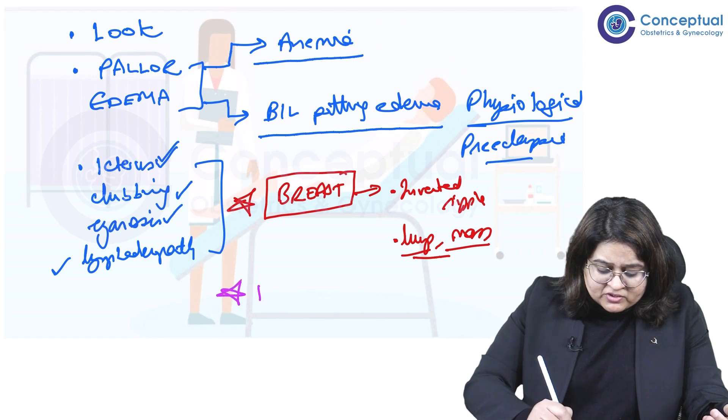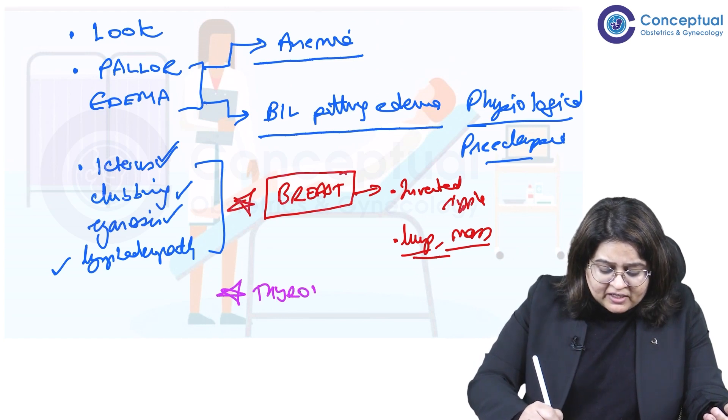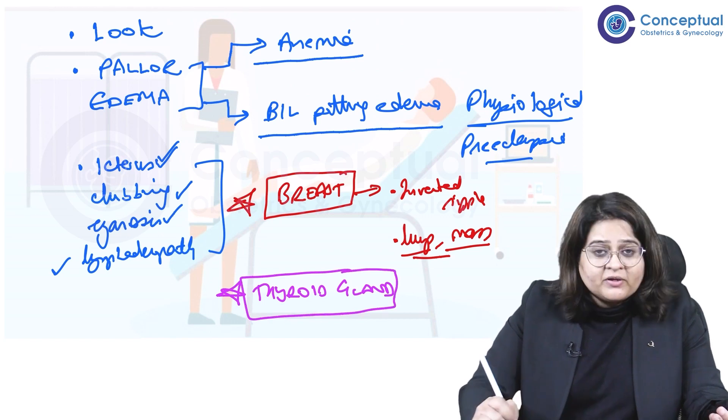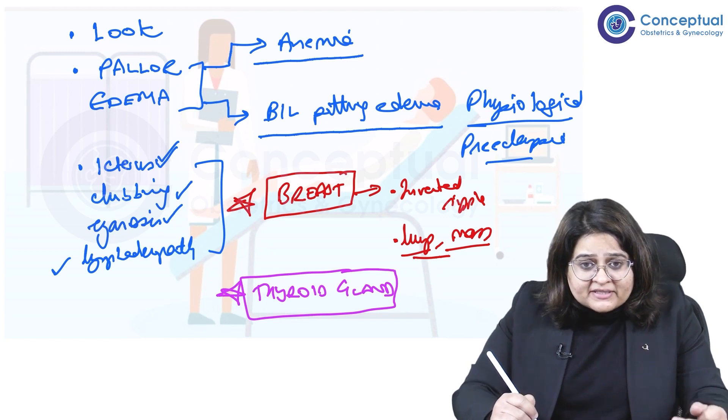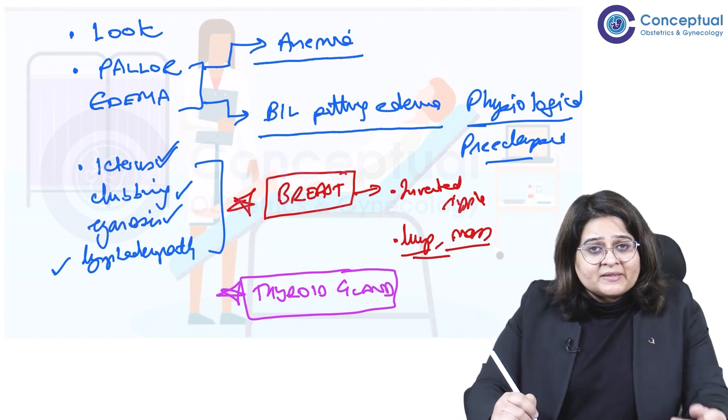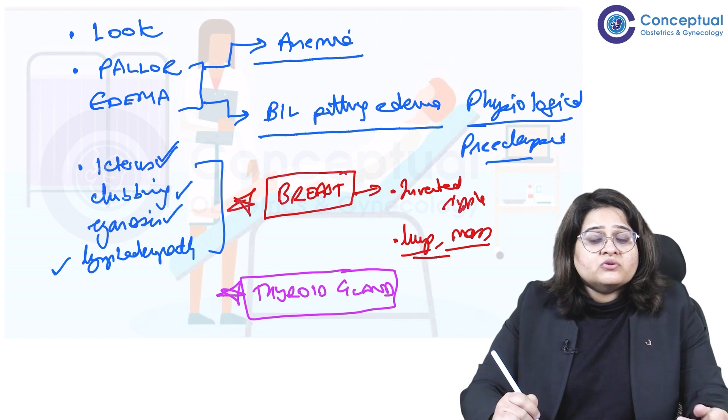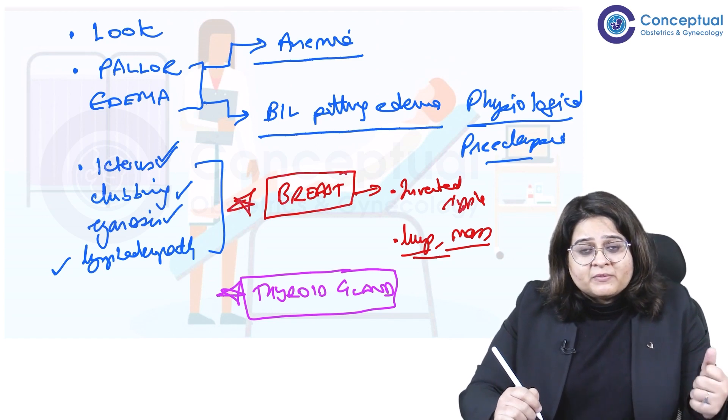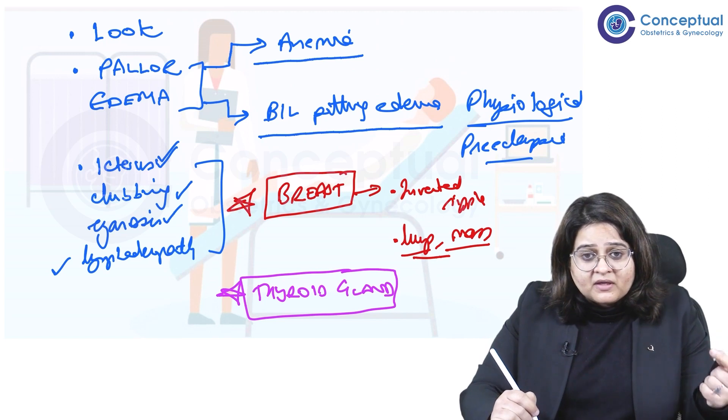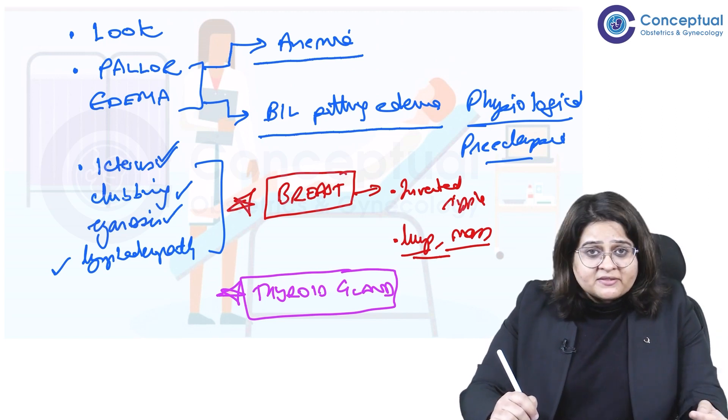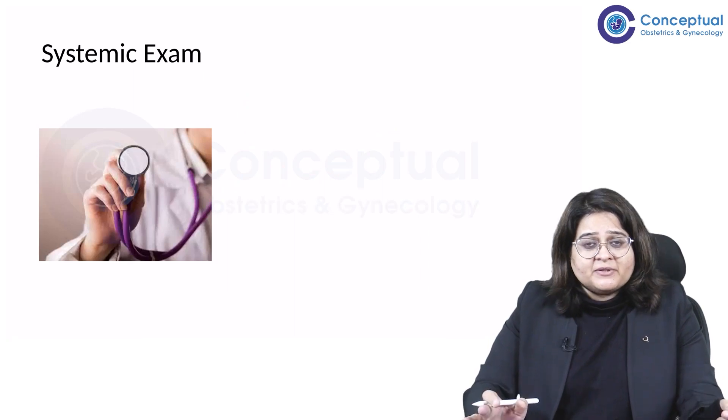And the second important thing is to look for a palpable thyroid gland. So if you're able to palpate the thyroid gland, this needs to be evaluated further. Let's get a thyroid function test done. Goiter is endemic in our country, so this should not be missed. So a palpable thyroid gland and breast examination have to be done in pregnancy, and this is part of your general examination.